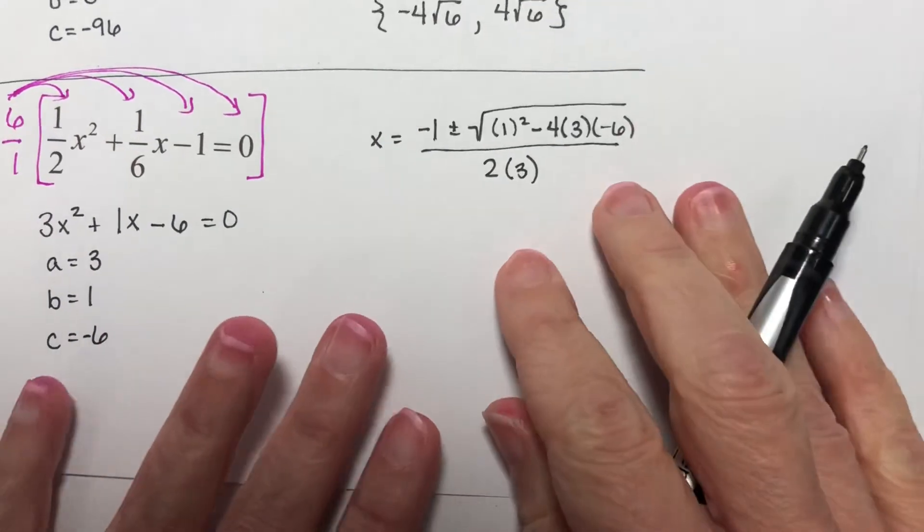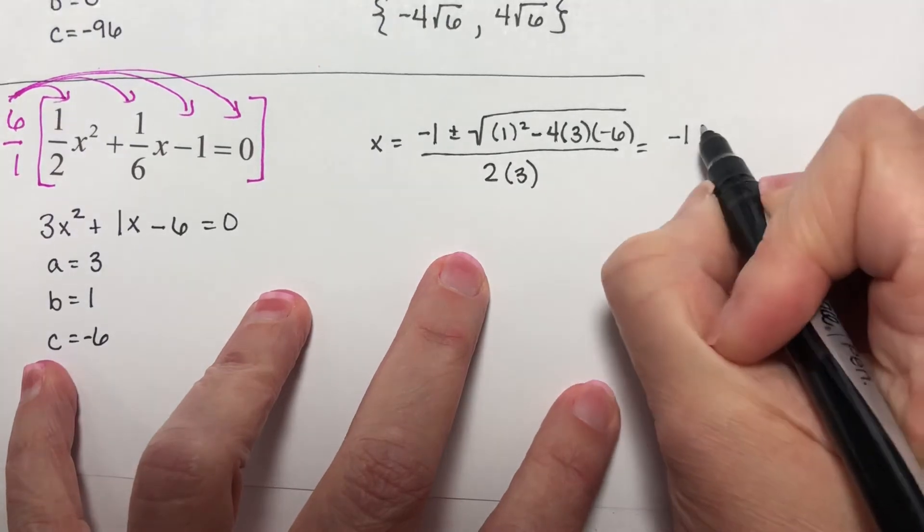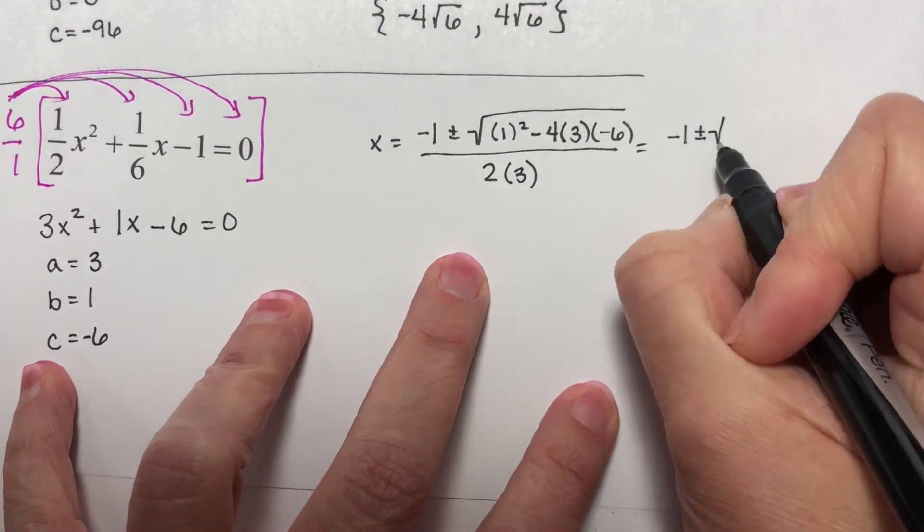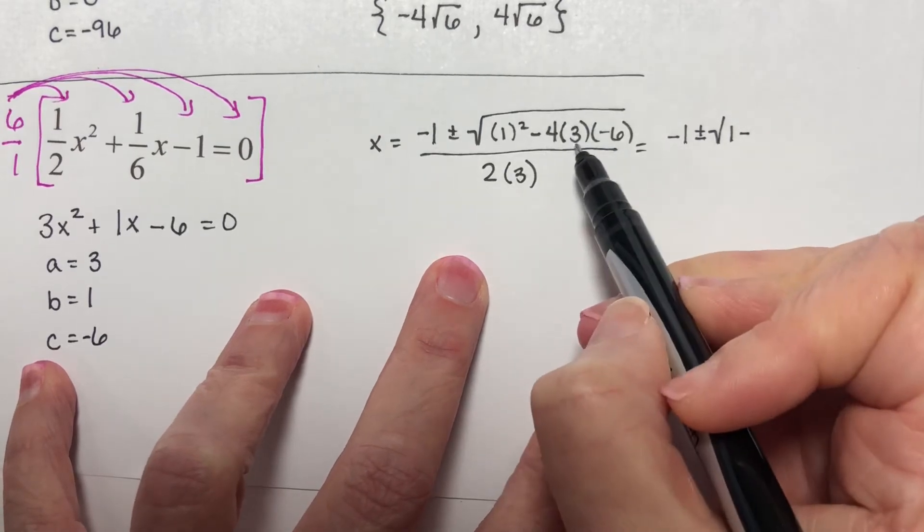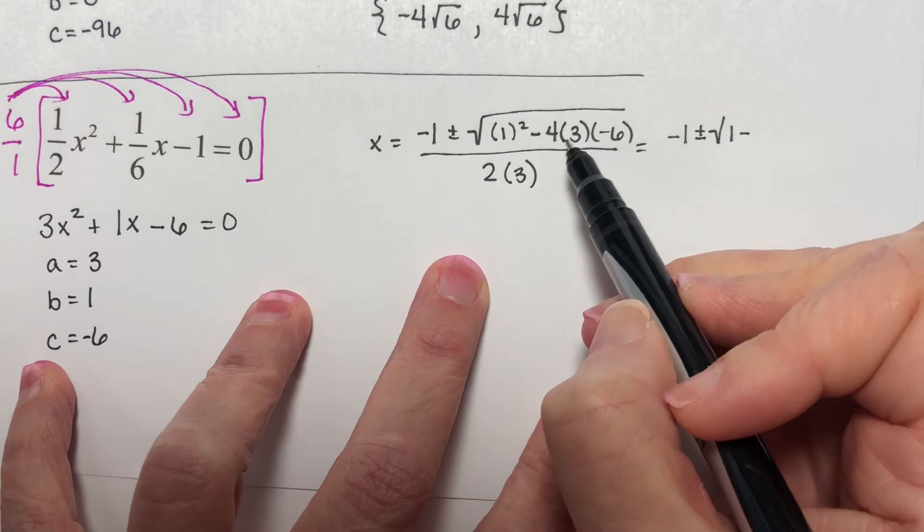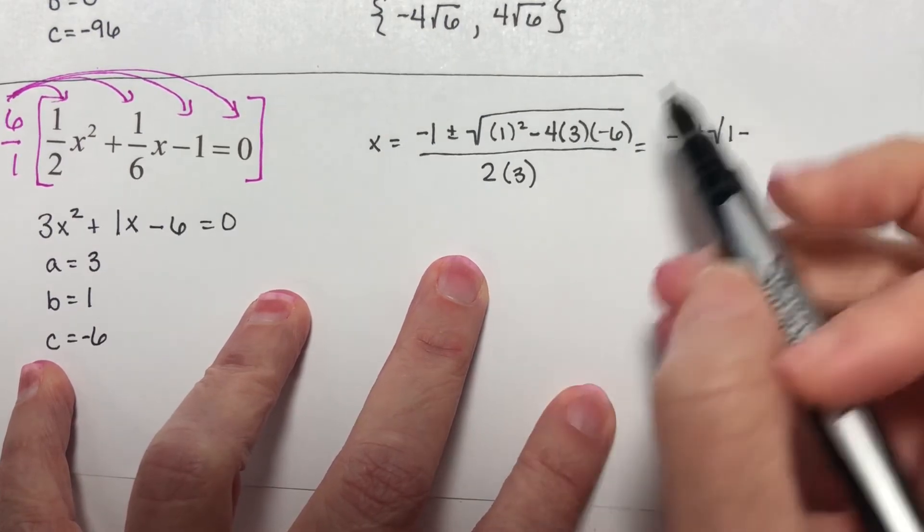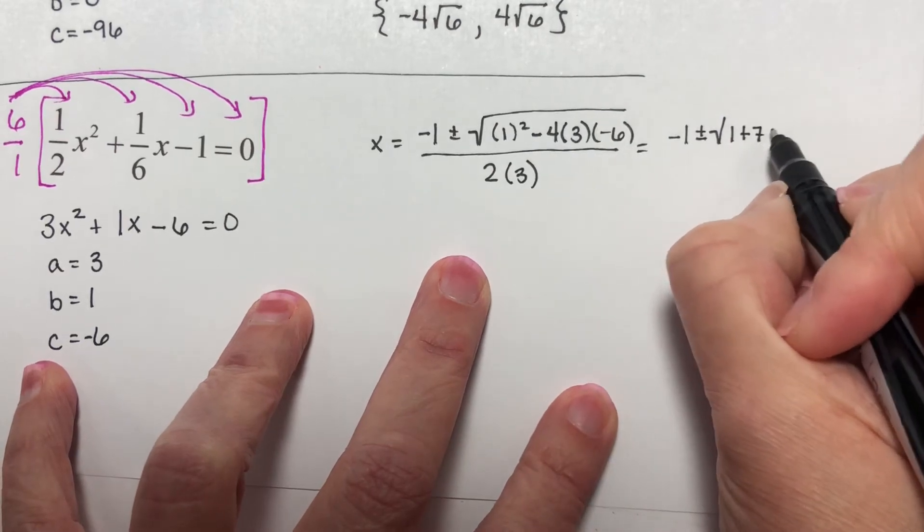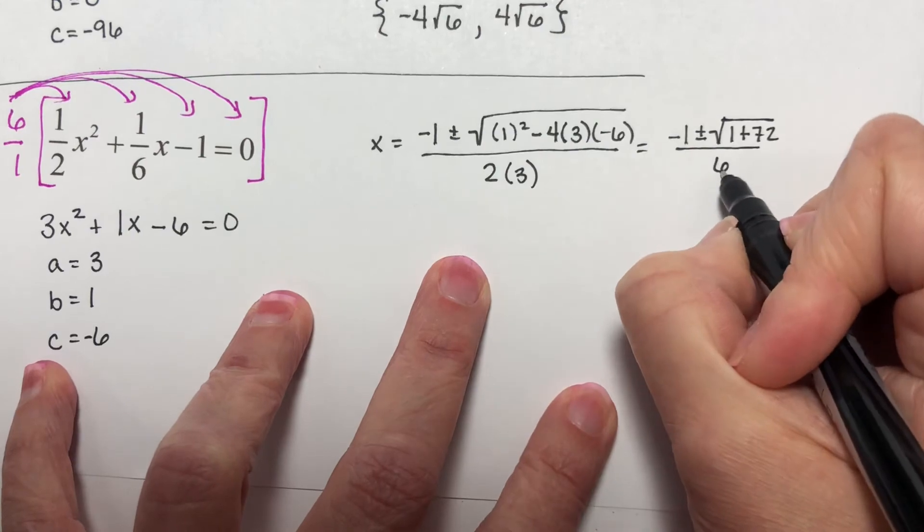Let's simplify inside here. Well, that's going to be negative 1 plus or minus the square root of 1 squared is 1, minus 4 times 3 times negative 6. Well, 4 times 3 is 12, 12 times 6 is 72, so this is going to be plus 72 over 2 times 3 is 6.